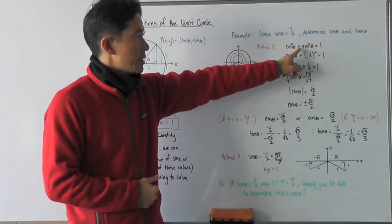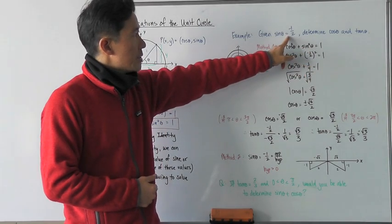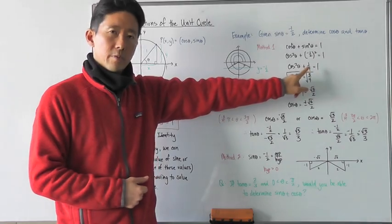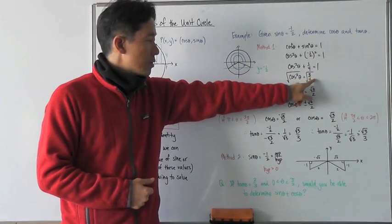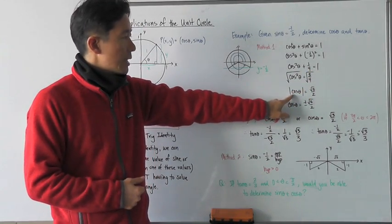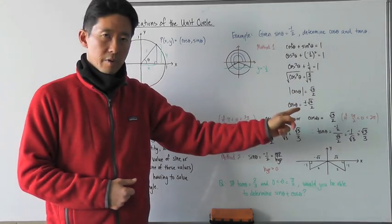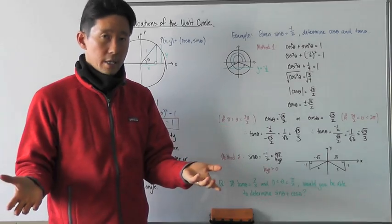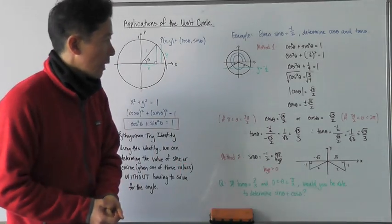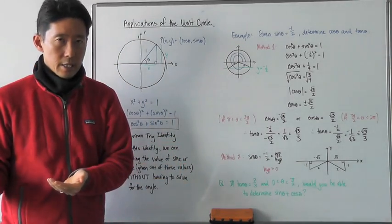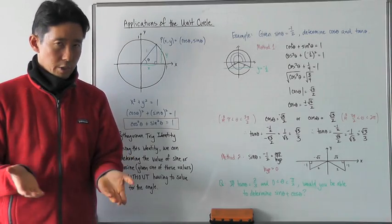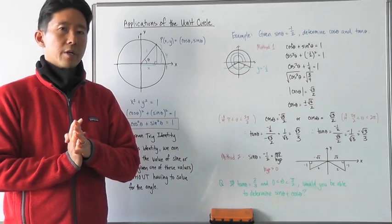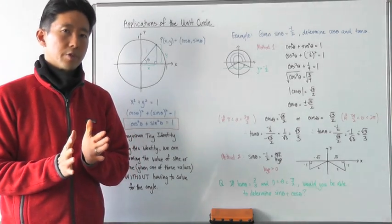Let's use the Pythagorean trig identity by substituting negative one half for sine theta, squaring that to get one-fourth, then subtracting one-fourth from both sides to get three-fourths. Taking the square root of both sides, we get the absolute value of cosine theta equals the square root of three over two — so cosine is either positive or negative root three over two. Which one it is depends upon which quadrant you're in, and generally the problems will specify this.